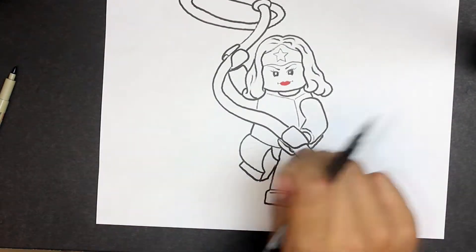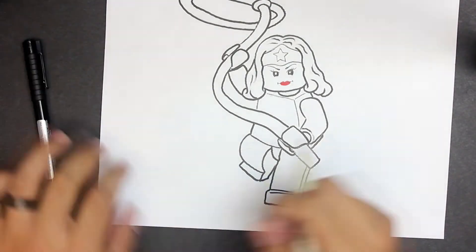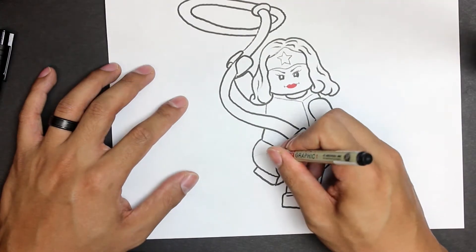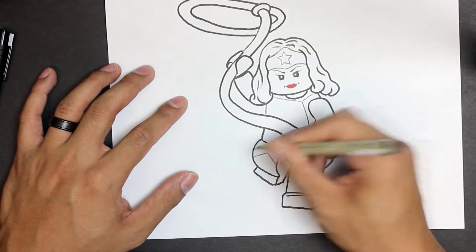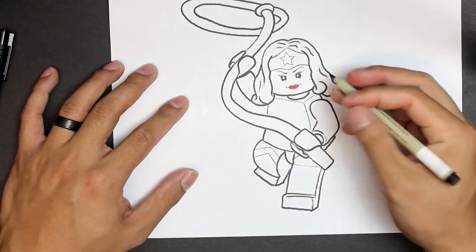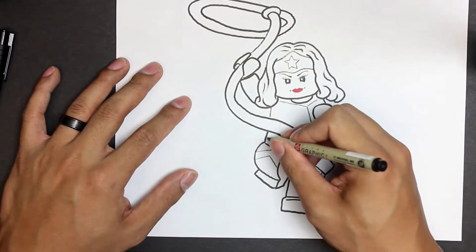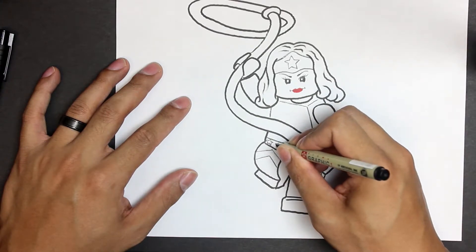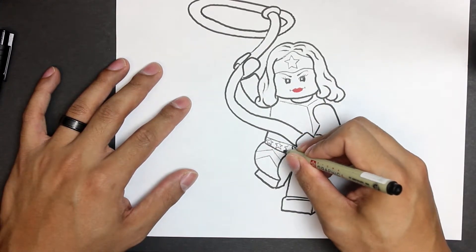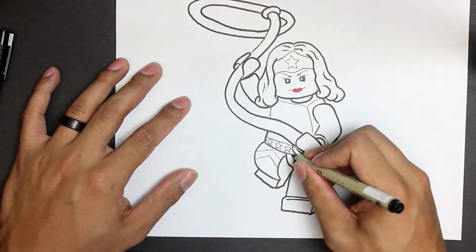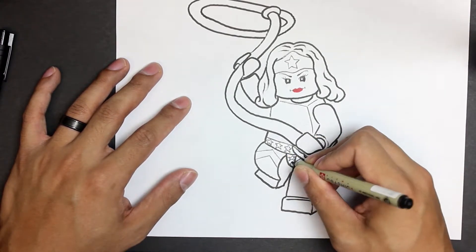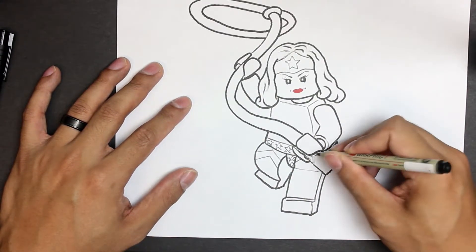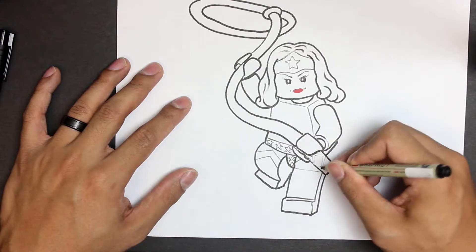Now I'm going to add some detail with a Micron pen, such as the emphasis in the boots and also the emphasis in the costume that she wears. Down below her waistline, I have to draw individual stars. This shouldn't take too long. There's a little bit of texture on the actual lasso to emphasize that it is a rope.